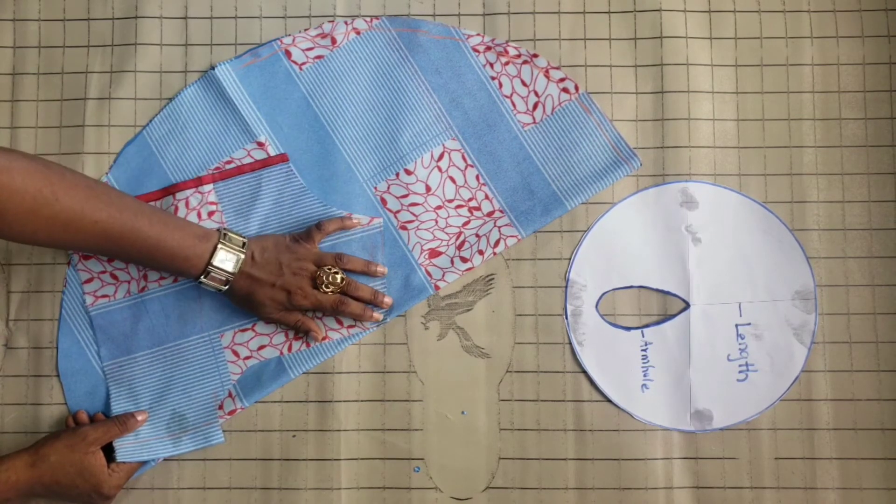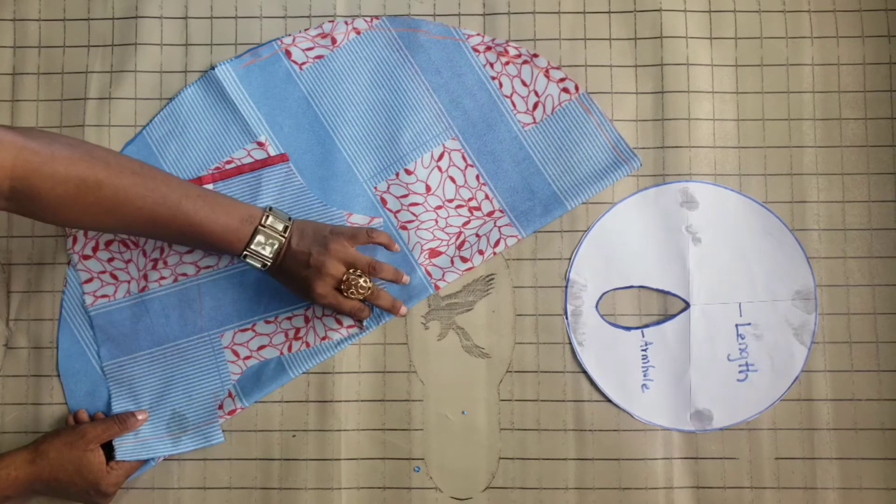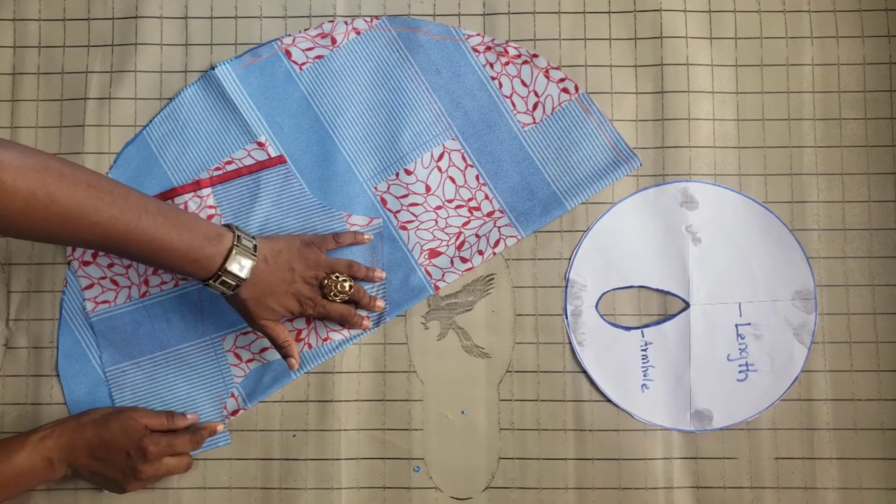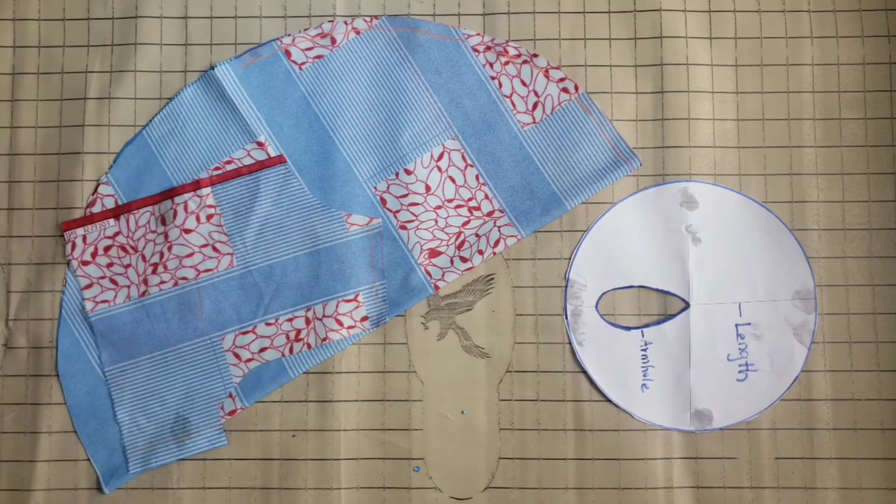This is the seam allowance. See here? This is where I notch. And this way. This part there is my seam allowance for the side. Then I'll cut.